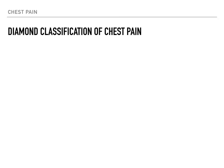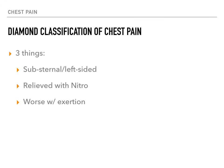The Diamond Classification of chest pain classifies chest pain based on three things. Any one or all of these conditions can be met, and you score the type of chest pain from zero to three. Those three things are: the location of the chest pain — whether it's substernal or left-sided — whether or not the chest pain is relieved by nitroglycerin, and whether or not the chest pain is worse with exertion.